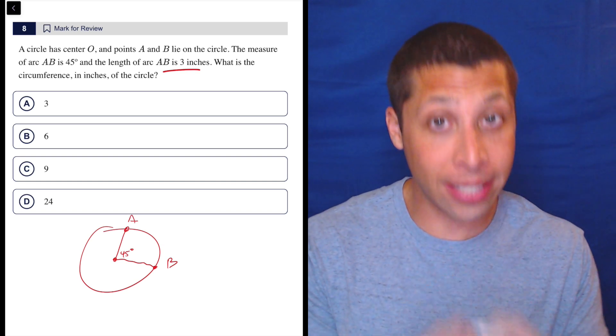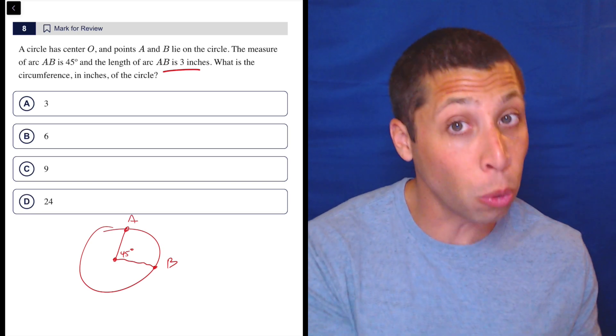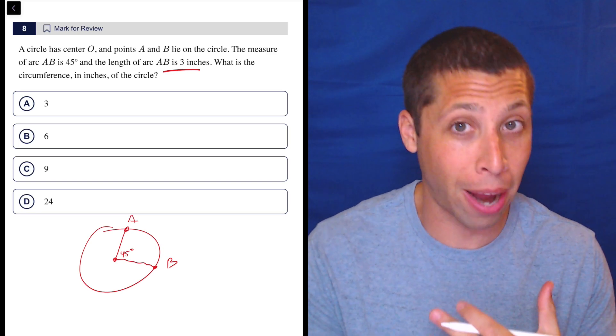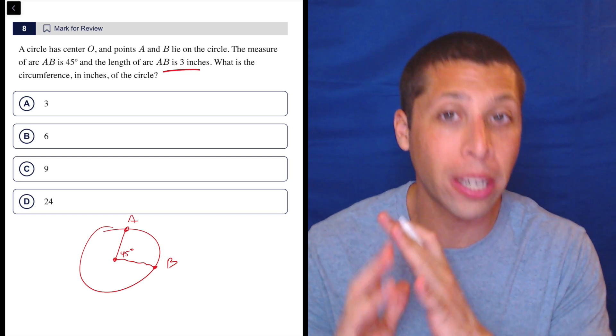Well, these are two different measurements. 45 degrees is a proportion. Three inches is a distance that's something you can measure with a ruler. You could not measure 45 degrees with a ruler. You could measure with like a protractor, but that's how you'd measure an angle. So these are different qualities.